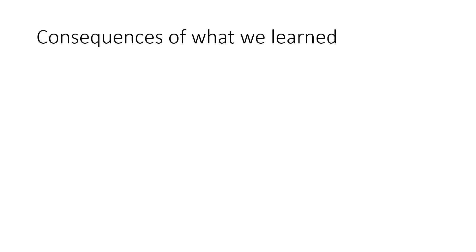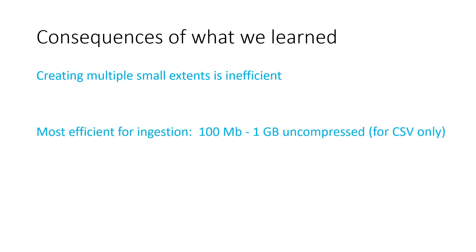Now let's talk about the consequences of what we've learned. Creating multiple small extents is inefficient because they get merged — we basically ingest twice. As much as possible, we want to ingest data in a way that allows it to form an extent of the proper size. The most efficient range for ingestion is between 100 megabytes and one gigabyte of uncompressed content. That said, it's not a hard rule — if we have plenty of compute, or we're doing a batch ingestion at 3 AM with no queries until 7 AM, the merging overhead doesn't matter. This is mainly relevant for near-real-time ingestion.